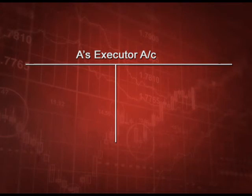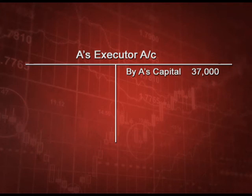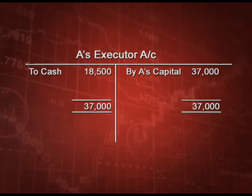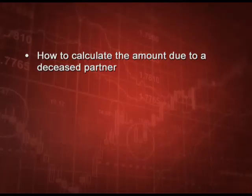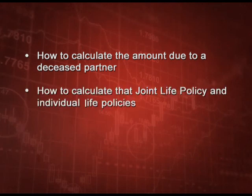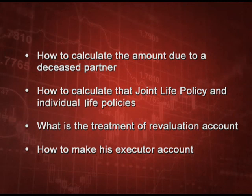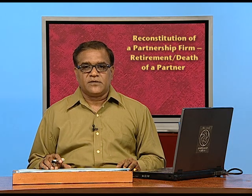In today's discussion, we learnt how to calculate the amount due to a deceased partner — what is debited and credited to his account — how to calculate profits, the treatment of joint life and individual life policies, the revaluation account, and how to prepare the executor account. This completes our chapter on retirement and death of a partner. Thank you very much.